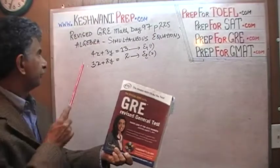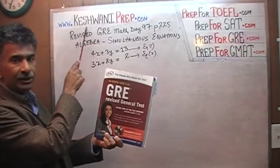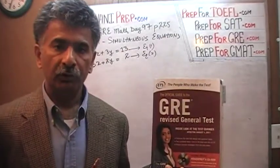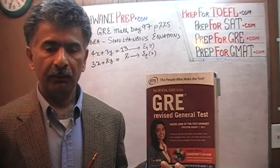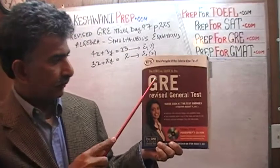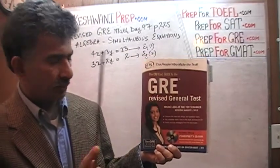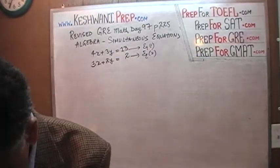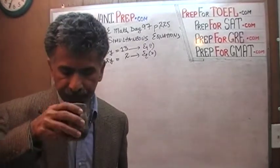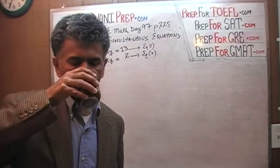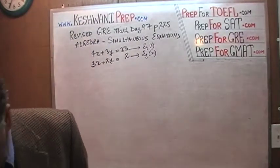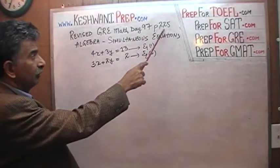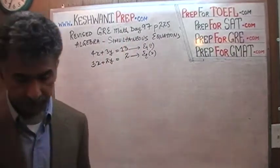Hello, my name is Keshwani — K-E-S-H-W-A-N-I. We are here because we want to prepare for the GRE. We have been solving GRE math problems out of this book, the Official Guide to the GRE Revised General Test. If you do not own this book already, purchase one immediately — you are going to need it. The problem we are about to solve is at the bottom of page 225, and today is lesson number 97.